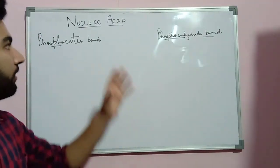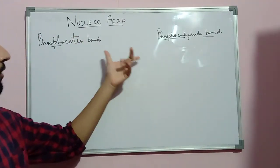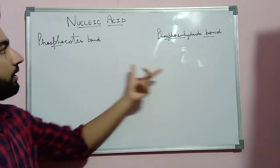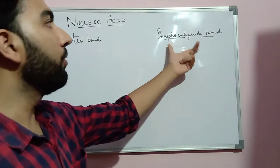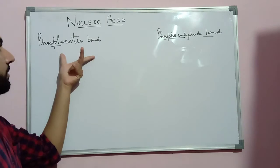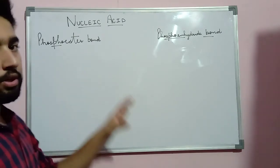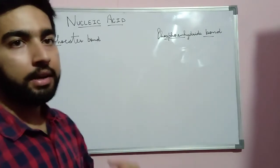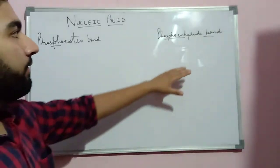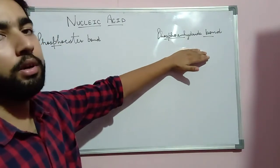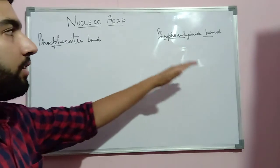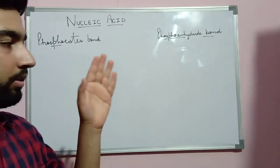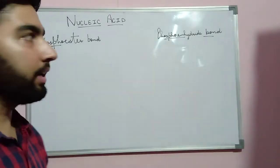Let us discuss the formation of two types of bonds. First is the phosphoester bond, and the second is the phosphoanhydride bond. The phosphoester bond is present in the structure of nucleotides, polynucleotides, or DNA, while the phosphoanhydride bond is present in the formation of the energy currency ATP — adenosine triphosphate.